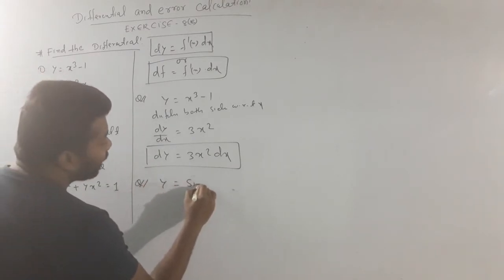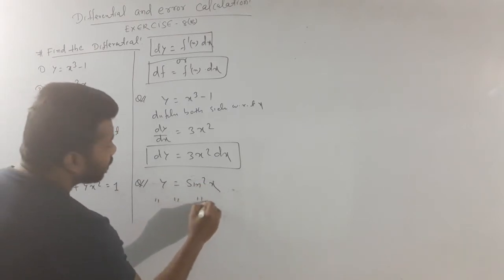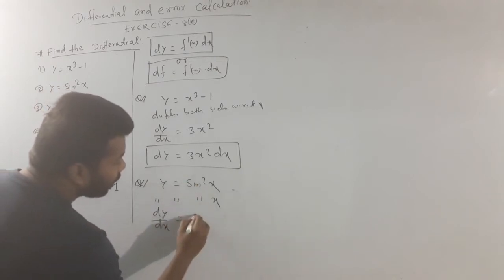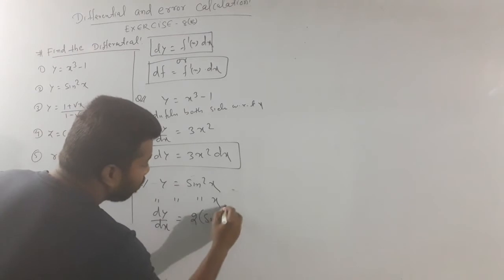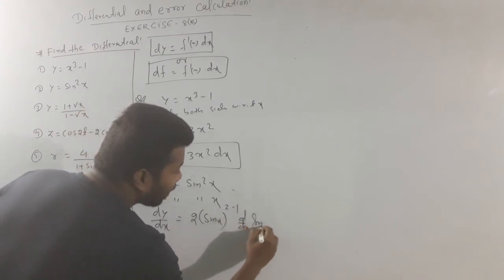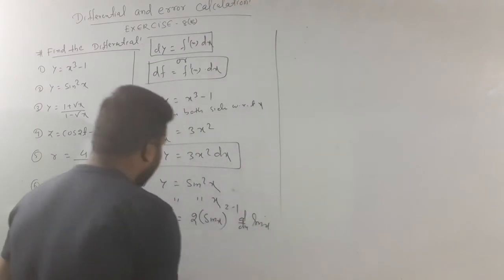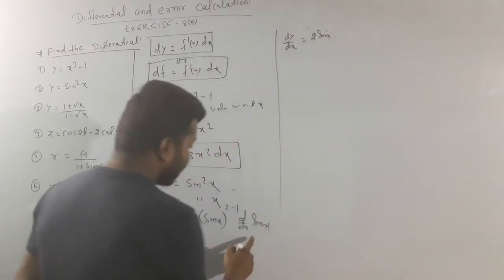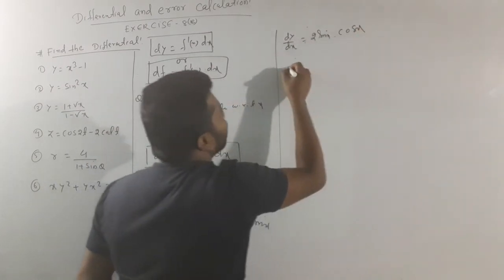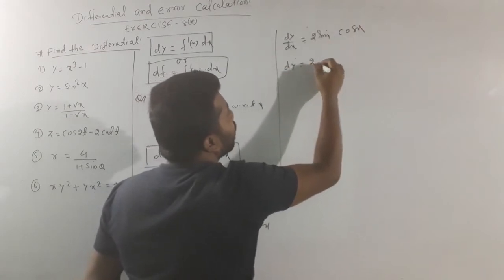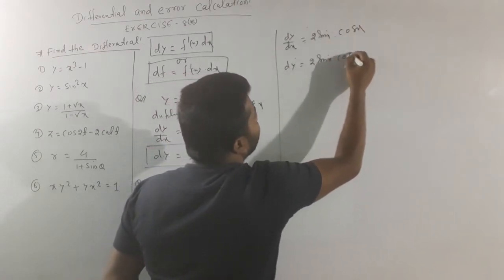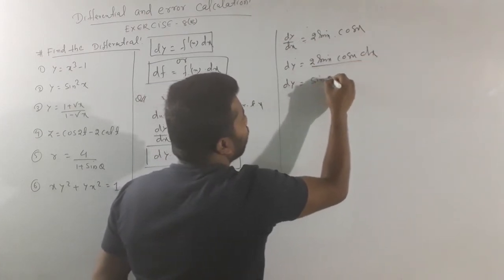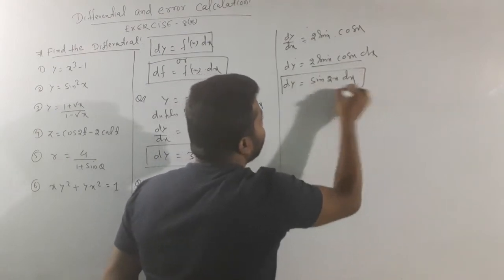Next question: y is equal to sin squared x. Differentiate both sides with respect to x. dy by dx equals 2 sin x into cos x, using the chain rule derivative of sin x. So dy equals 2 sin x into cos x dx, which simplifies to dy equals sin 2x dx. This is our differential.